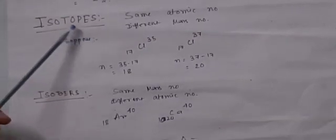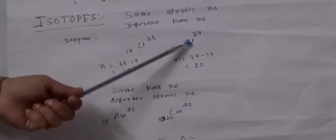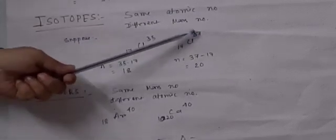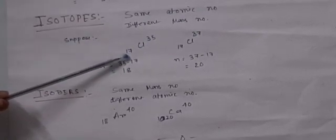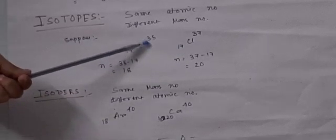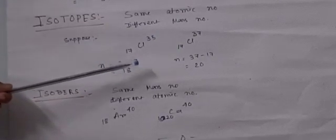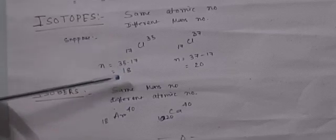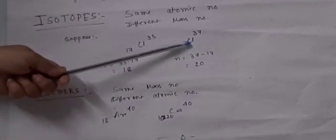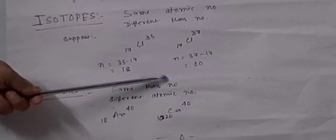Next is isotopes. Isotopes are elements having the same atomic number but different mass numbers — that is, the same element having different mass numbers. Example: chlorine 17/35 and chlorine 17/37. You can see both contain 17 protons as the atomic number is 17, but their mass numbers differ — 35 and 37. So they are known as isotopes of each other. Due to different mass numbers, their number of neutrons will be different. For the first chlorine, neutrons are 35 minus 17 equals 18, and for the second, neutrons are 37 minus 17 equals 20.